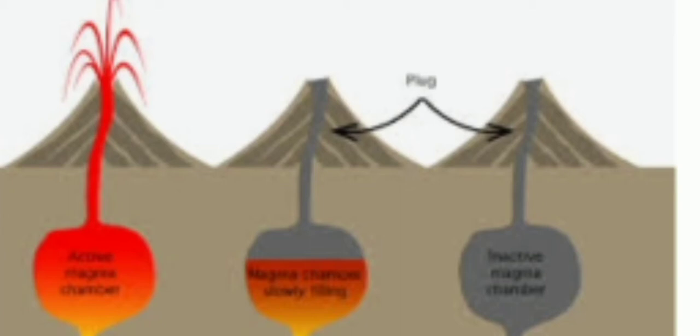The third type is extinct volcanoes, which are not likely to become active. Examples of extinct volcanoes are Mount Aconcagua in South America and Mount Kenya in Africa. Mount Kenya is quite famous.